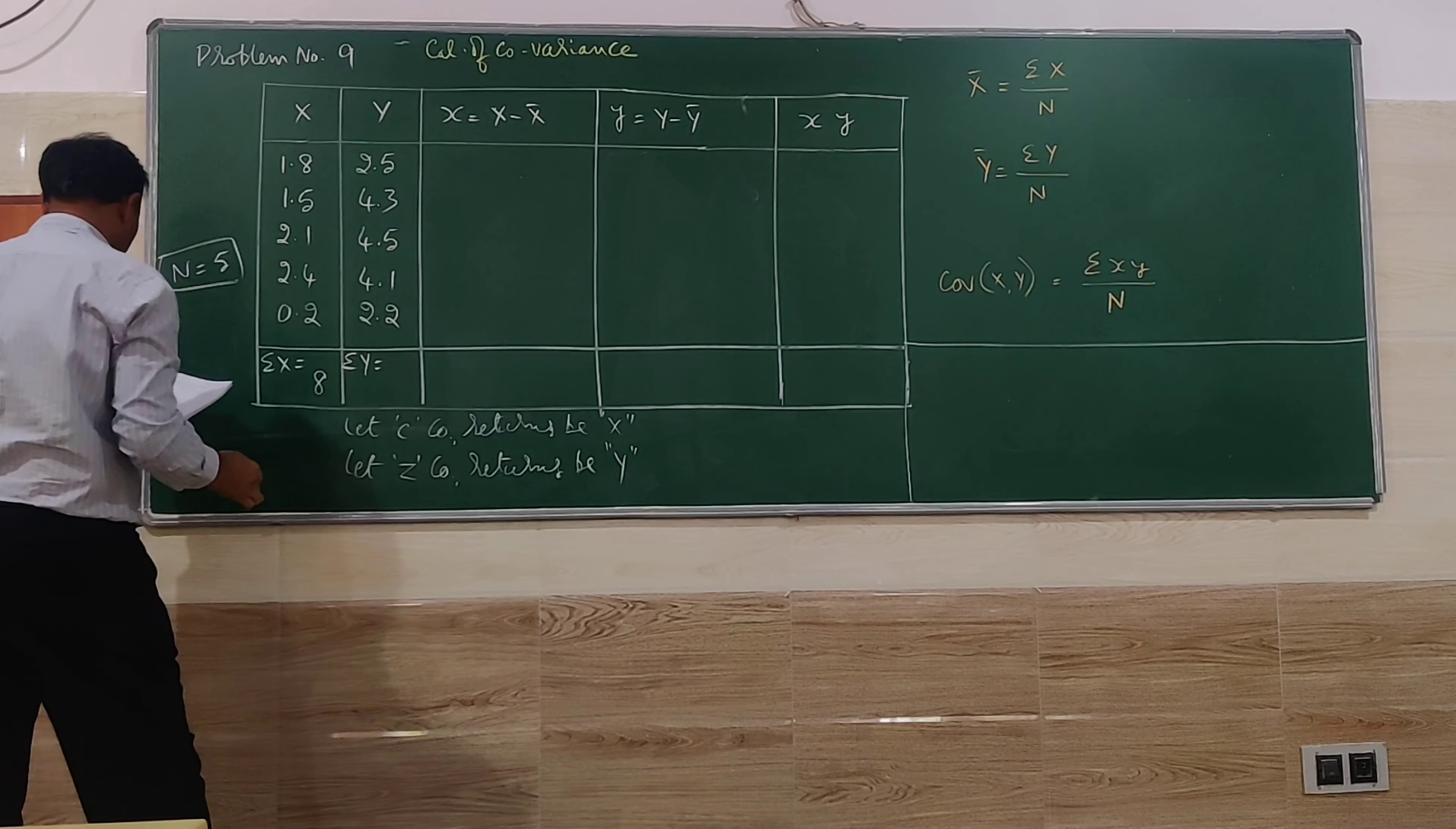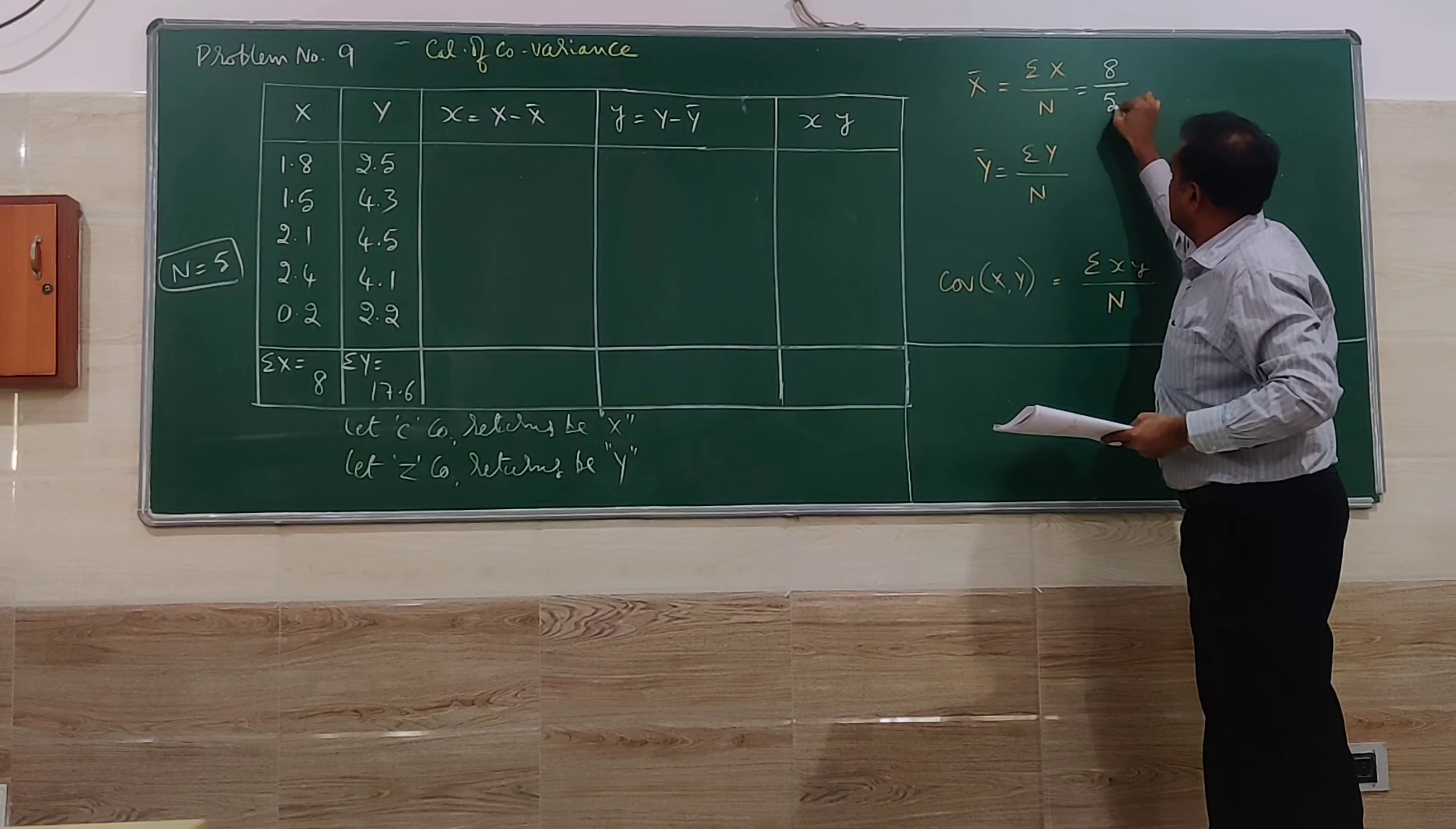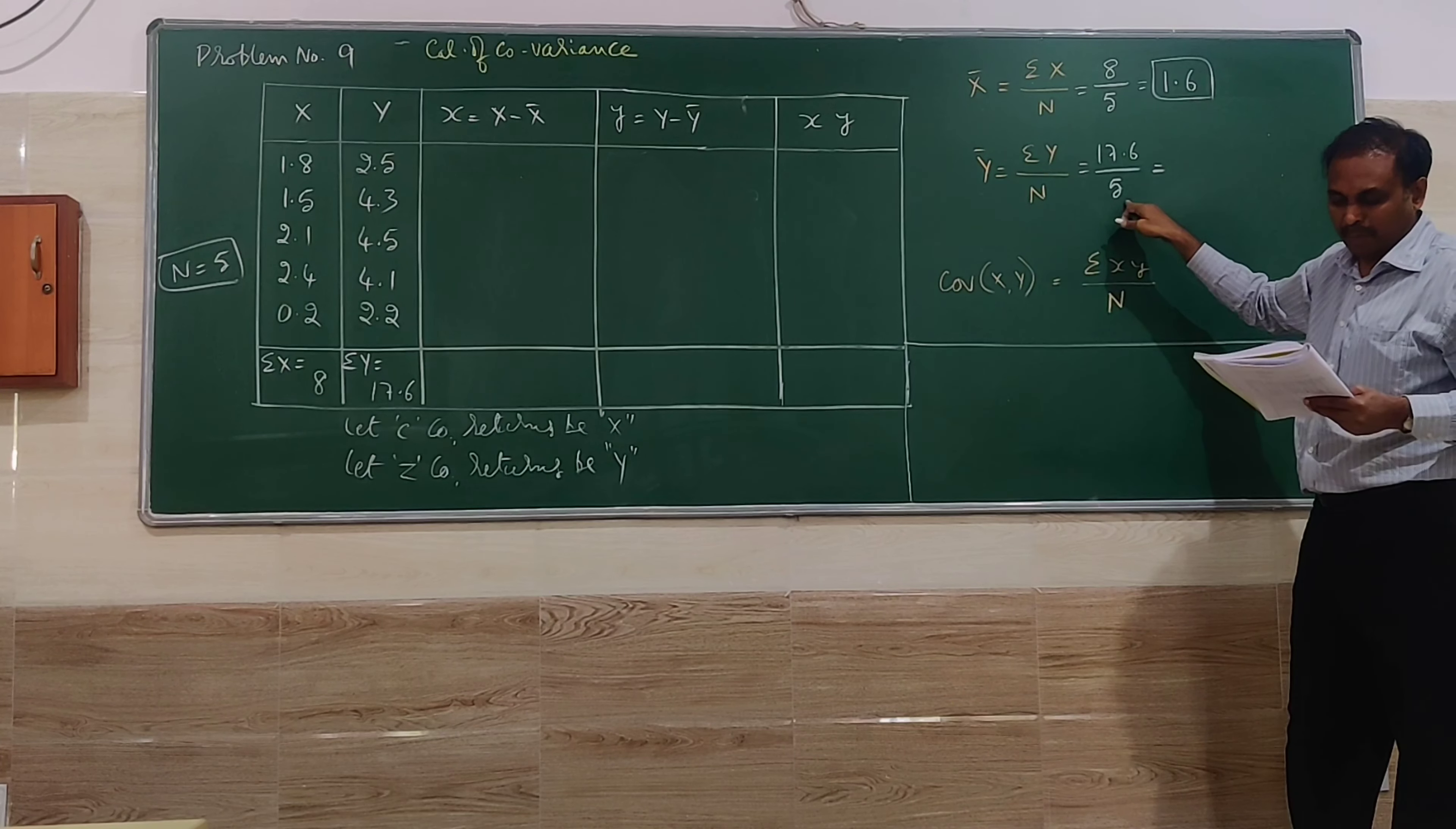X column total is 8, Y column total is 17.6. So first with the help of X and Y, we have to find the simple mean, we call it as X bar and Y bar. So X series average as well as Y series average we are going to find here. Average of X will be 8 by 5, that is 1.6. The average of Y series is 17.6 divided by 5, which is 3.52.